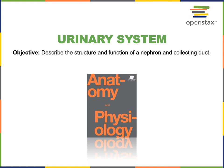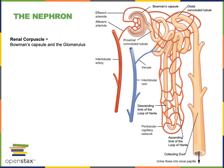This video will cover the following objective from the urinary system: describe the structure and function of a nephron and collecting duct. The nephron is the structural and functional unit of the kidney that is responsible for filtering the blood and producing urine.